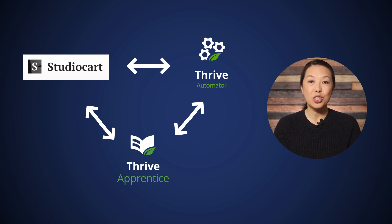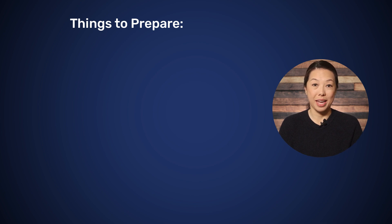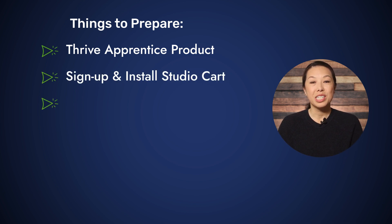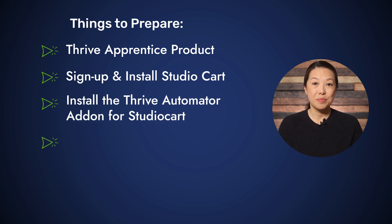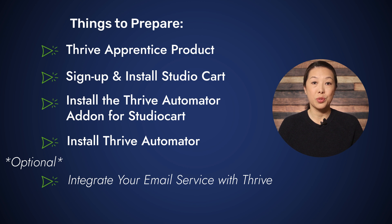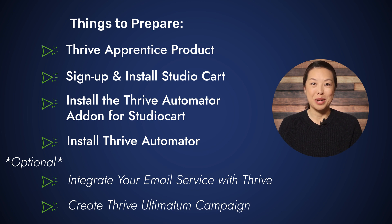To get started, let me show you what you can do with the StudioCart and Thrive Automator integration. In order to set all of this up, you'll need to prepare a few things beforehand. You'll need to have created a product in Thrive Apprentice, sign up for and install StudioCart, install the Thrive Automator add-on for StudioCart, and install Thrive Automator. If you want to add users to your email service, you'll need to integrate that with Thrive. And if you want to trigger a Thrive Ultimatum campaign, you'll need to create that campaign first. We have lots of helpful videos and articles linked below.